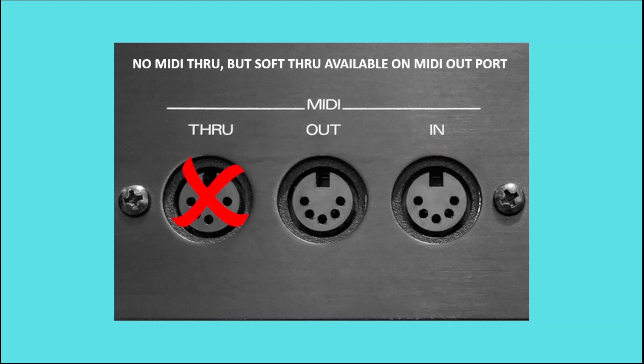But if you don't have a through port, as mentioned earlier, you may have a soft through available. Here the in port acts as normal but the out port acts as an out and a through at the same time, so it can send out its own signal but it can also take the signal received at the input and send that out simultaneously. If you want a more detailed breakdown on MIDI out versus MIDI through, I've left a link down below to a previous video that may help further or clarify your understanding.